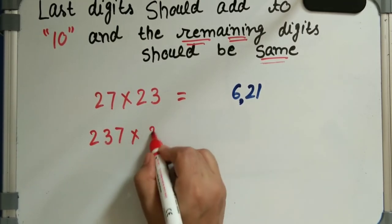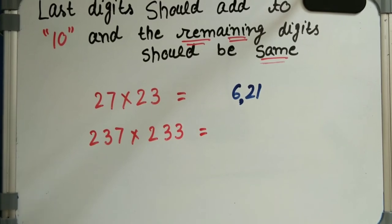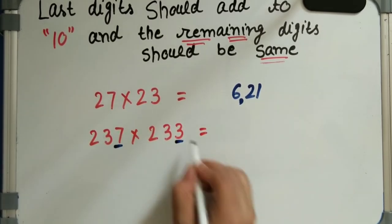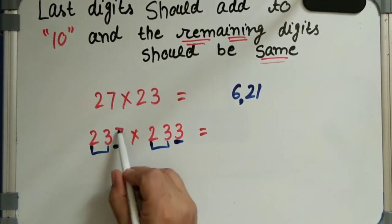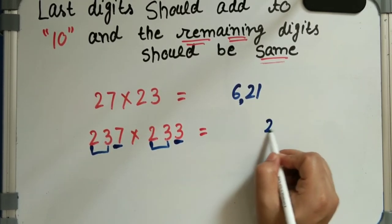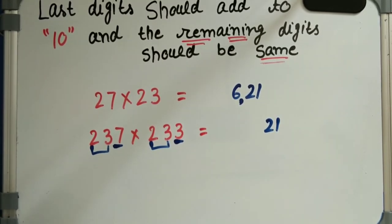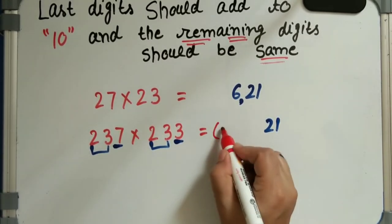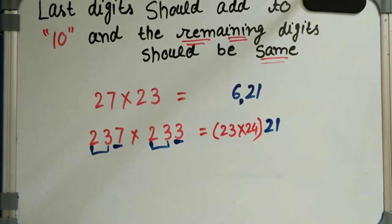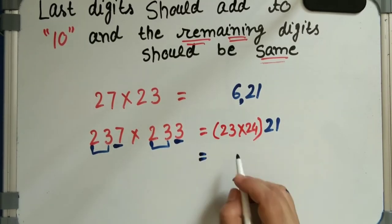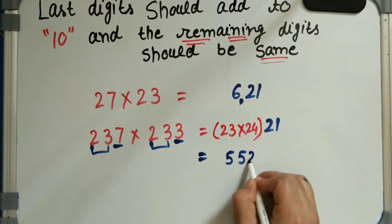Next example: 237 into 233. The sum of the last digits must be 10 — and 7 plus 3 equals 10. The remaining part is 23 and 23 — both the same. So 7 into 3 equals 21, and we add 1 to 23 to get 24. We then multiply 23 into 24, which gives 552. So writing it together: 55221.